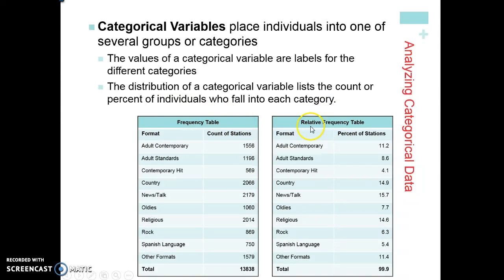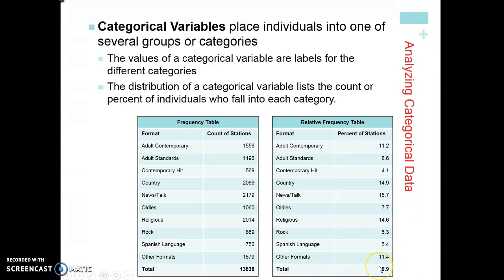A relative frequency table is just a percent. There are 13,838 people total. What the relative frequency table does is take, for example, adult contemporary's 1,556 and divide it by the total to give us what percent of people listen to adult contemporary. Notice the percents add up to 99.9 — that's due to potential rounding error, which is why it doesn't round up to exactly 100%.